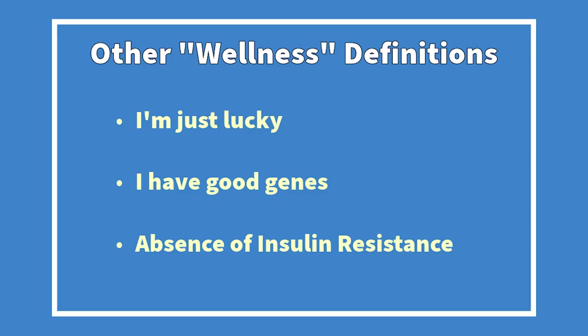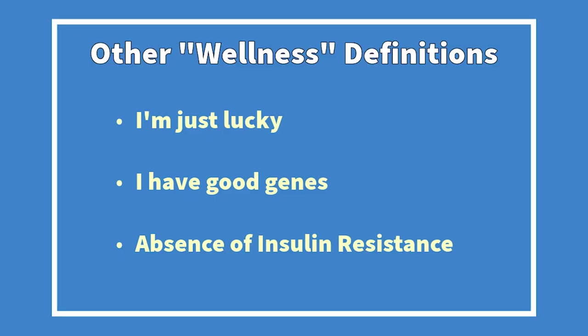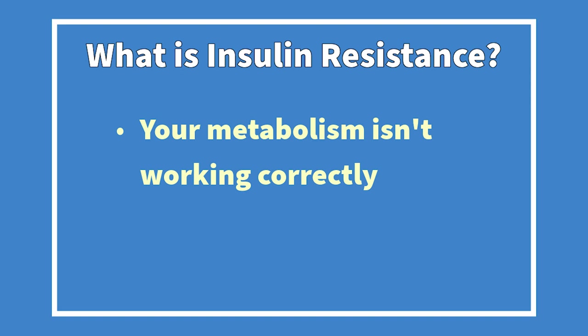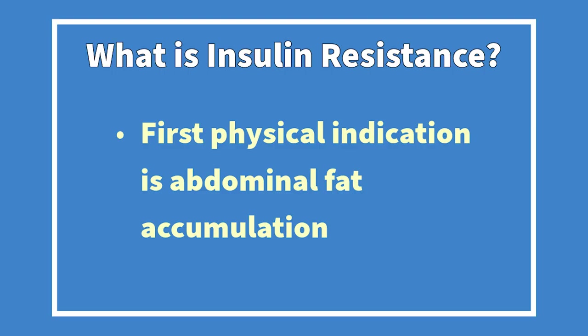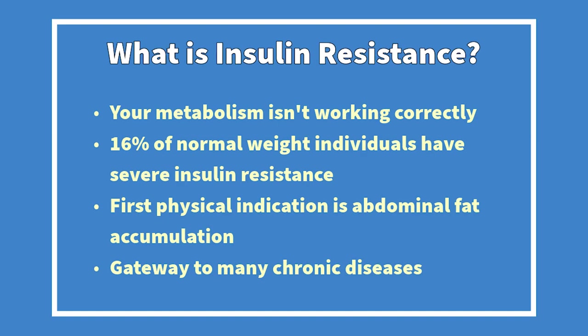Or 'I have good genes' — that's great for you, but how does it affect somebody else who doesn't have great genes? Here's a third definition of wellness that can be applied to a wide population: the absence of insulin resistance. So exactly what is insulin resistance? It means your metabolism is not working correctly. You can't look at a person and determine whether they have insulin resistance, because 16% of people who have insulin resistance have normal weight. But for most, the first physical sign is the accumulation of abdominal belly fat, and this is the gateway to many chronic disease states.